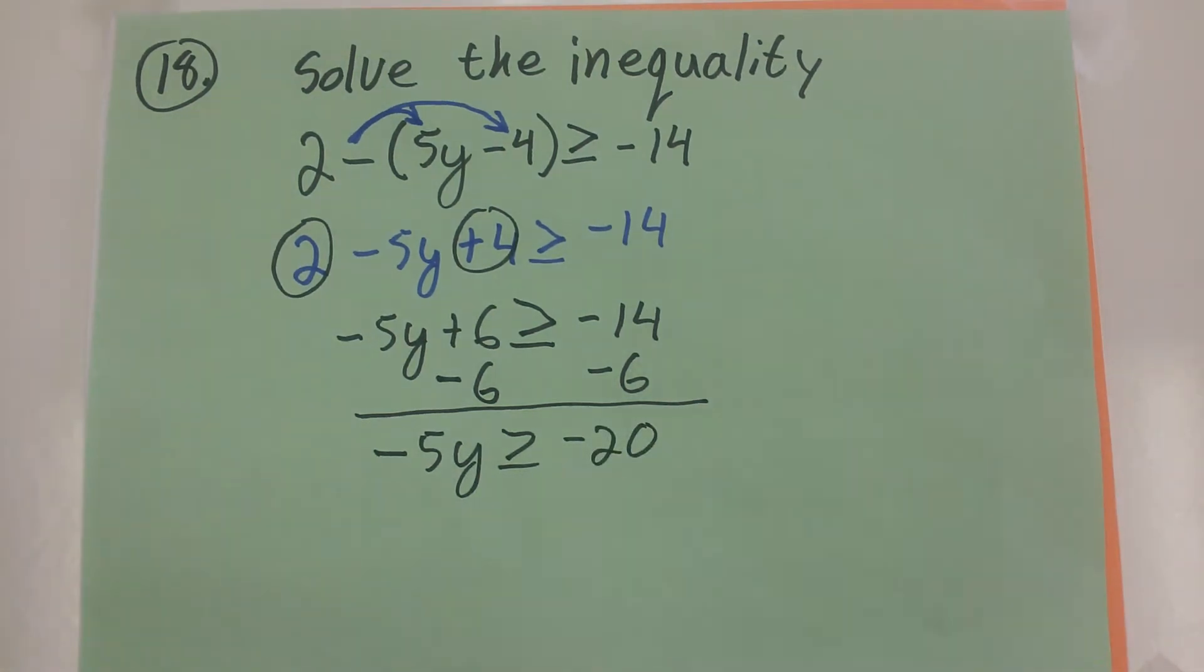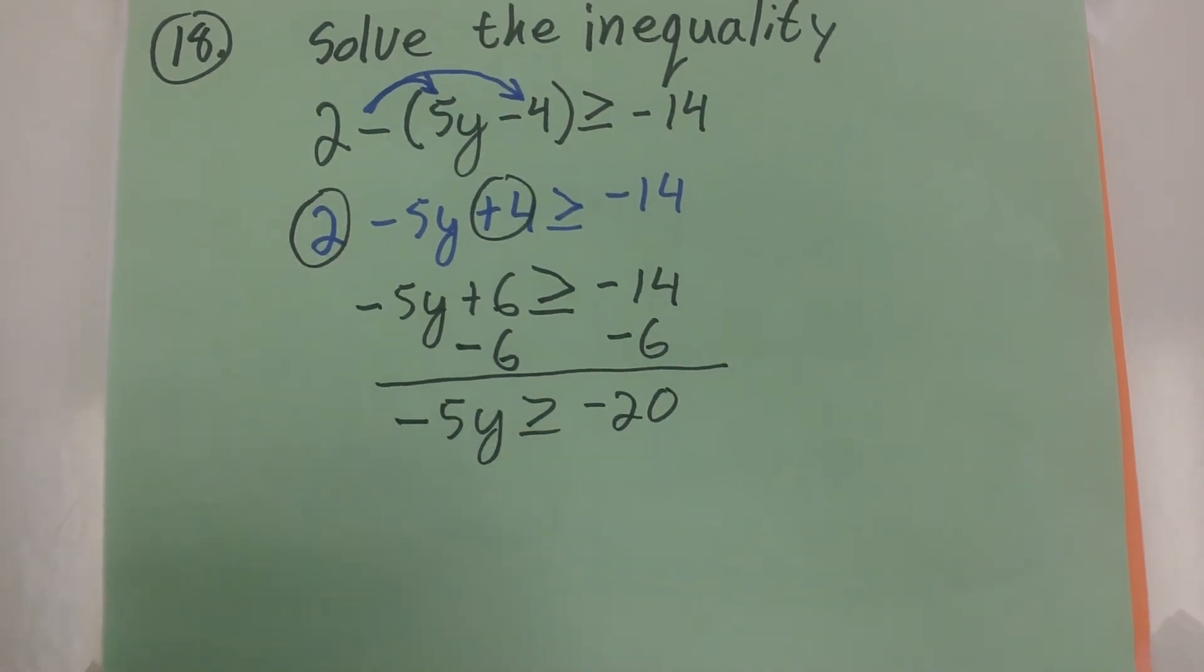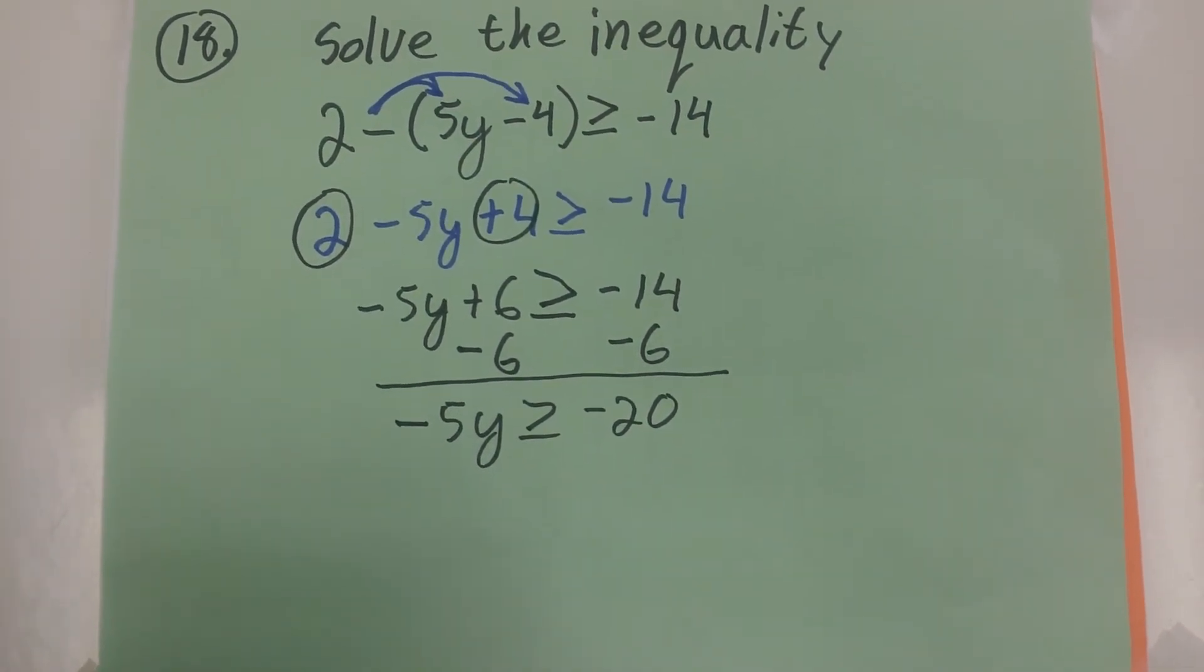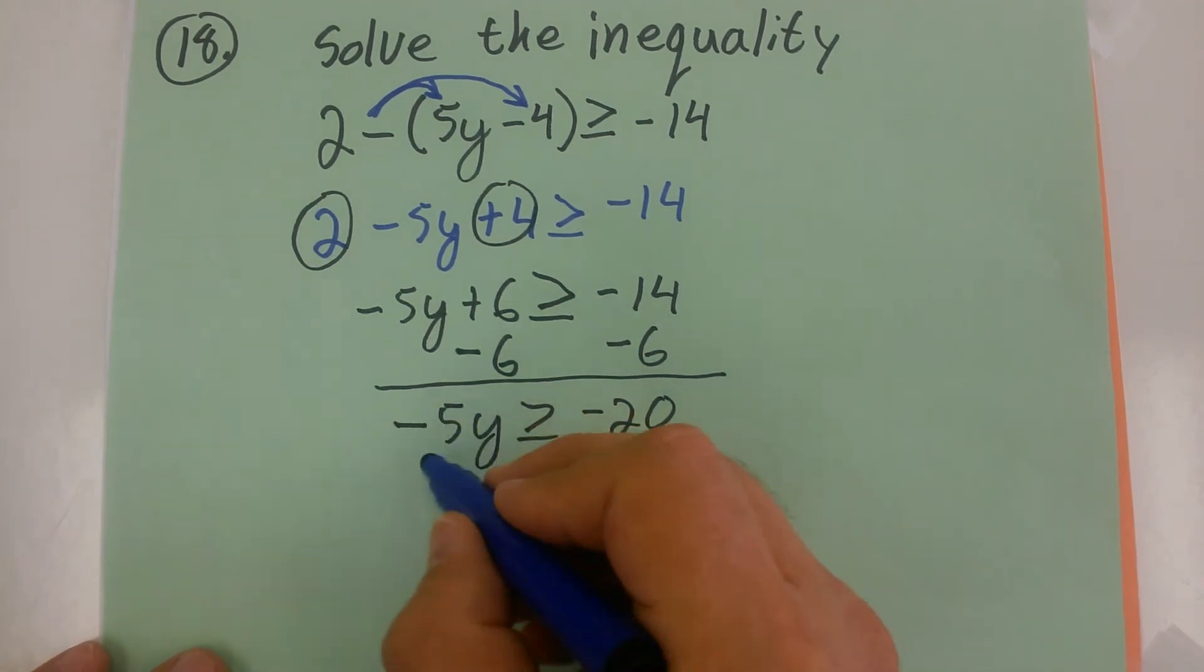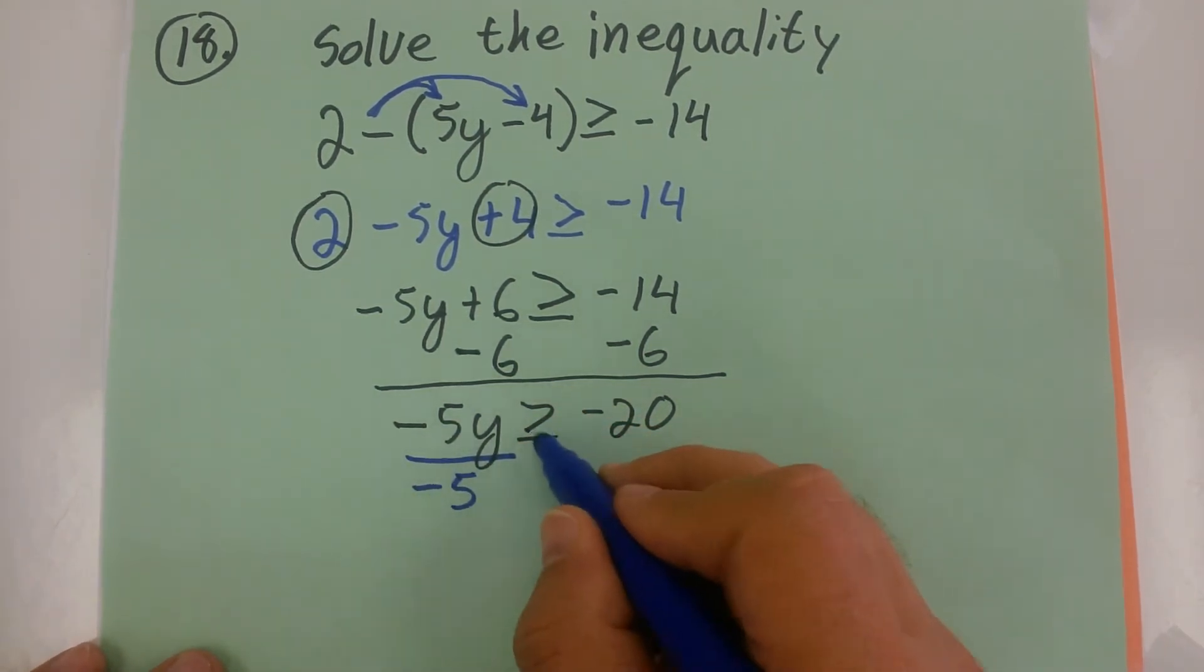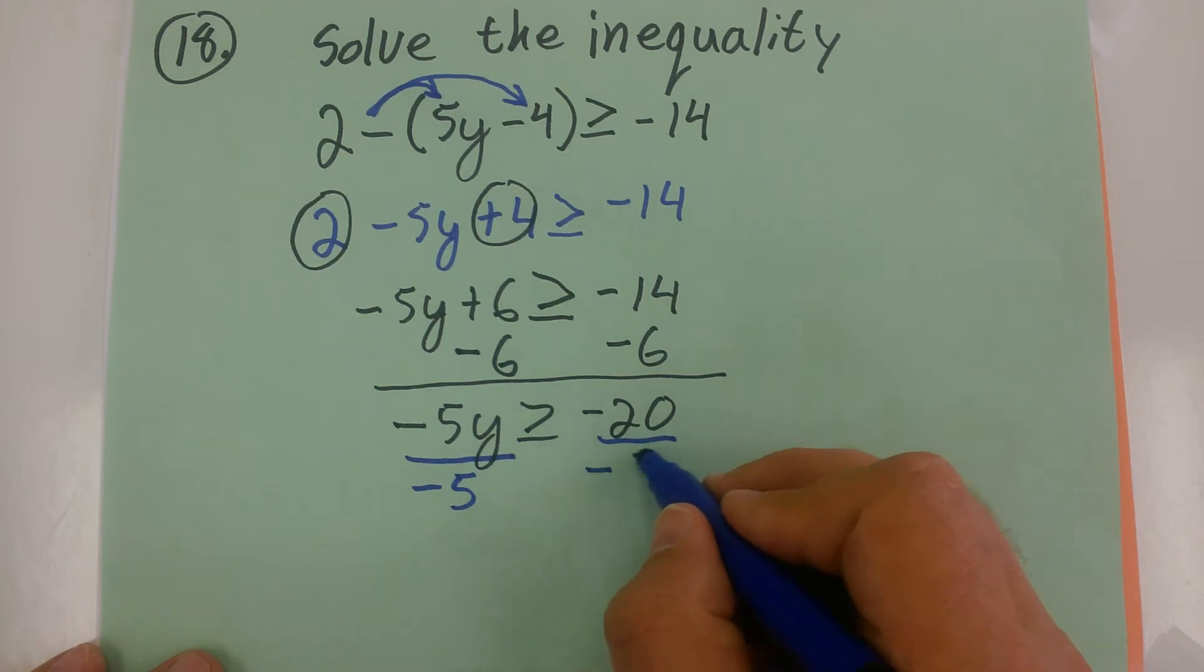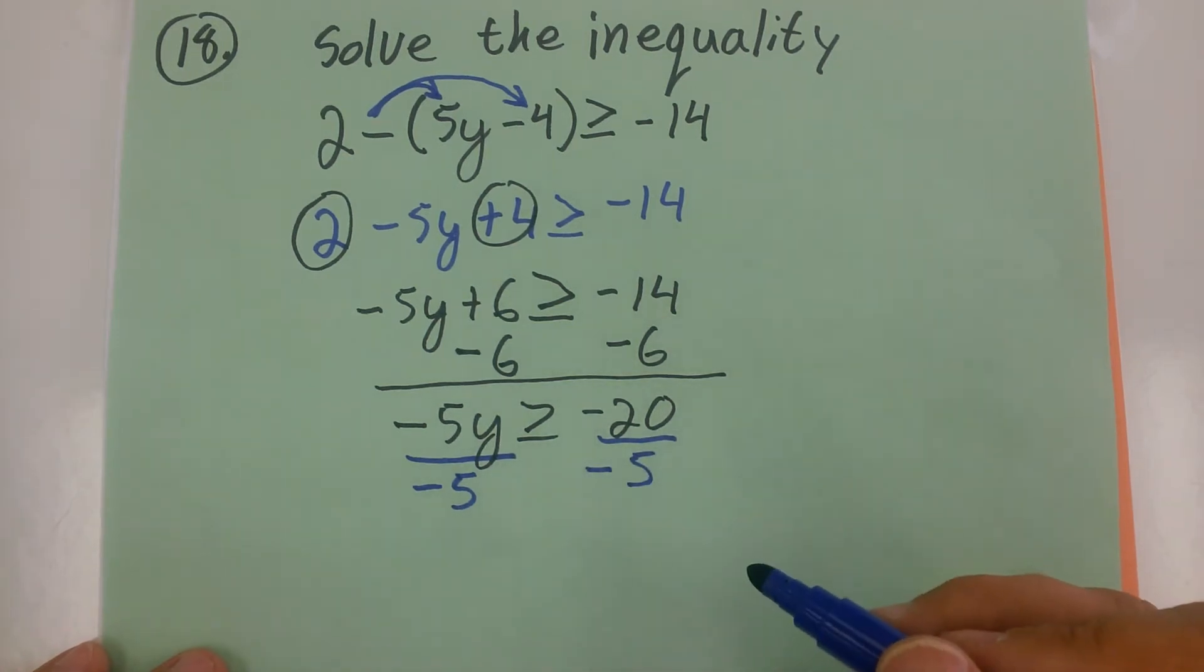Now, something tricky happens here with an inequality. Whenever you divide or multiply an inequality by a negative, something happens to that symbol. And the deal is that symbol will switch over the other way.